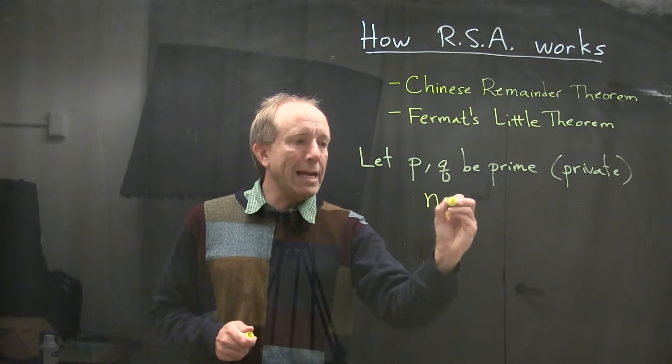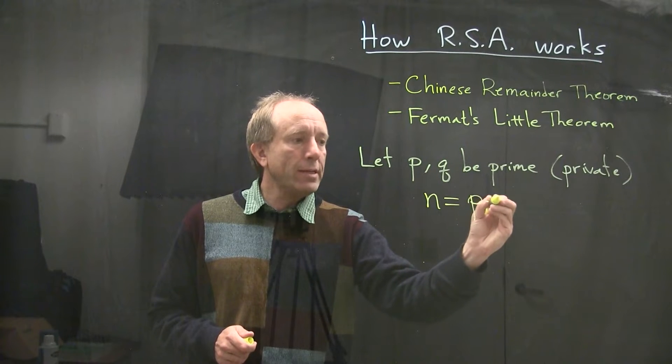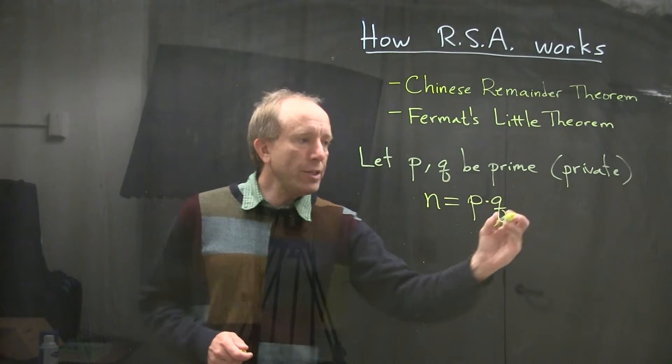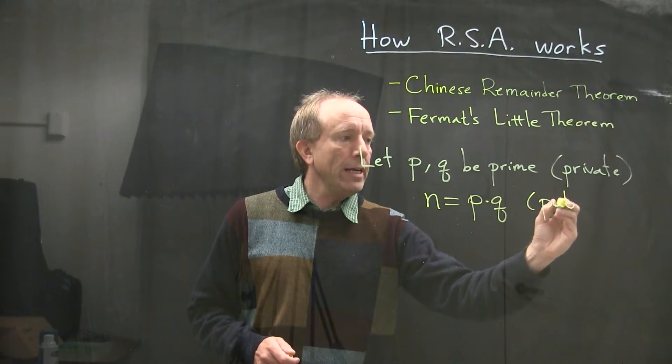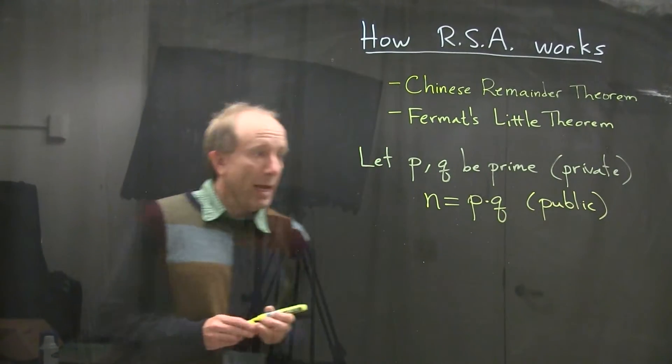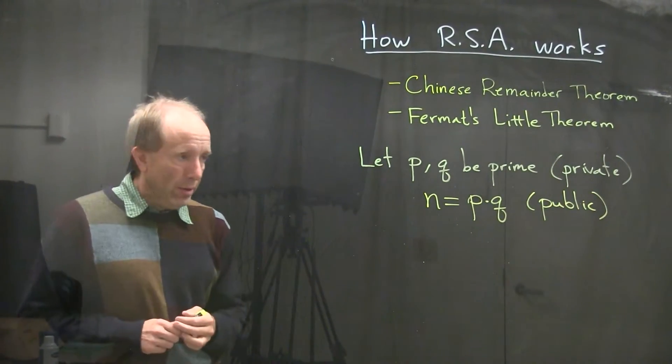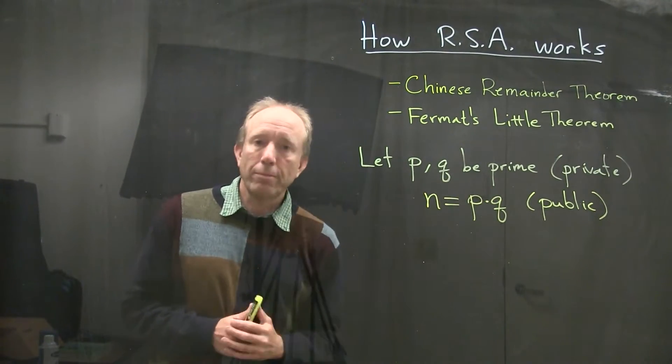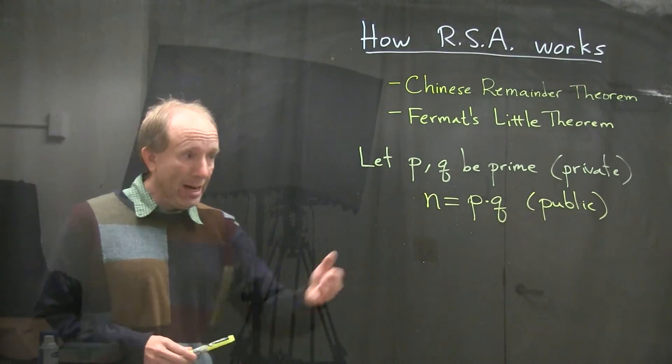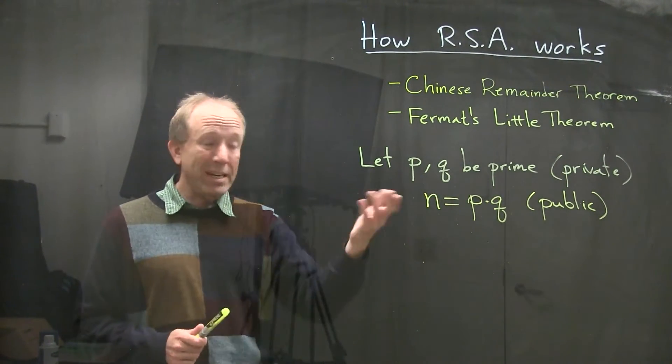And then what we do is we let N be equal to P times Q. And this value is publicly announced. And anybody who would like to send this individual who has publicly given out the value of N may do so.